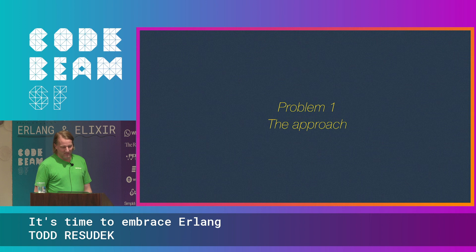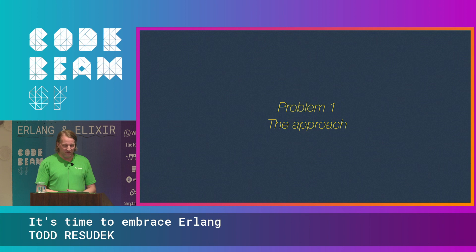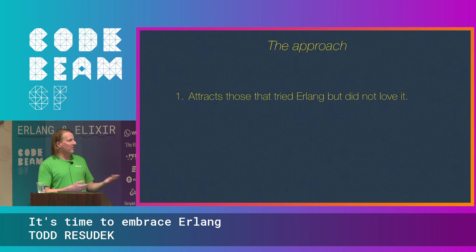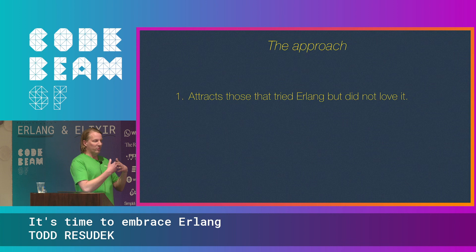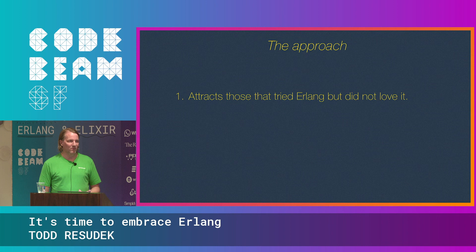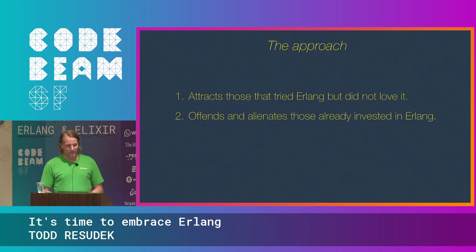There are several purposes to this talk, but one of them is to identify what I think are the problems with our ecosystem so far. The first one is our approach. Elixir was marketed as the solution to Erlang syntax, so who is that immediately going to attract? People who tried Erlang, have a great appreciation for the virtual machine, but didn't really love the syntax — which is honestly a pretty small audience. There aren't that many Erlangers to begin with.